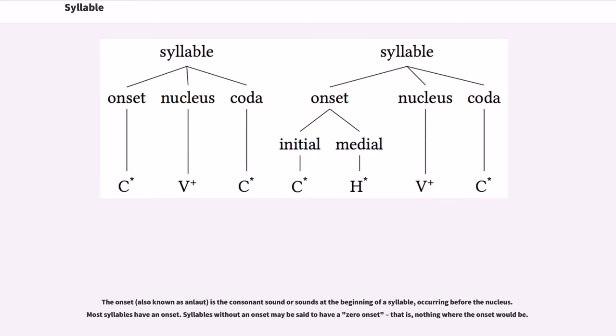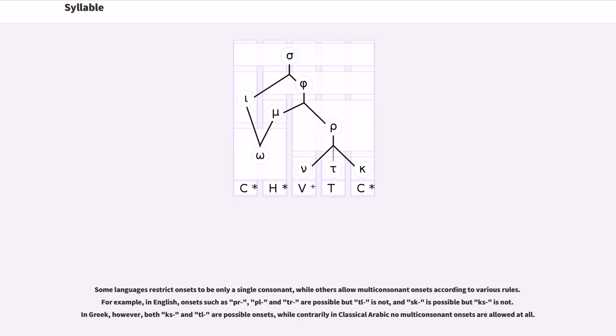The onset is the consonant sound or sounds at the beginning of a syllable, occurring before the nucleus. Most syllables have an onset. Syllables without an onset may be said to have a zero onset, i.e., nothing where the onset would be.